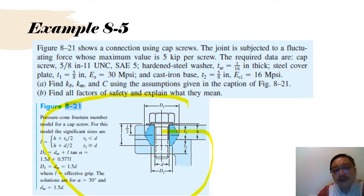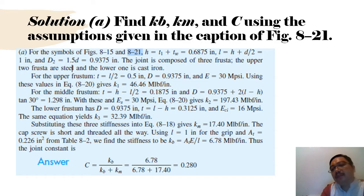Find KB, KM, and C. KB is the stiffness of the bolt, KM is stiffness of the member, and C is the fraction of the external load, using the assumptions given in the caption of Figure 8-21.